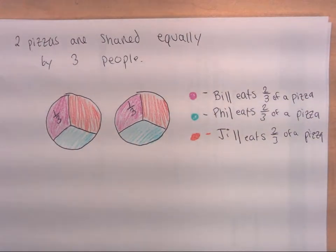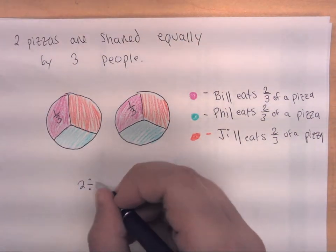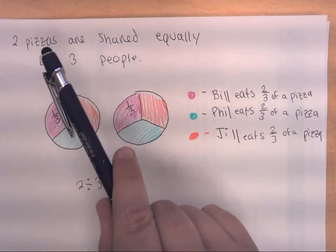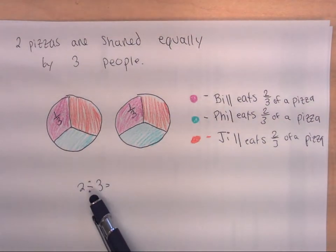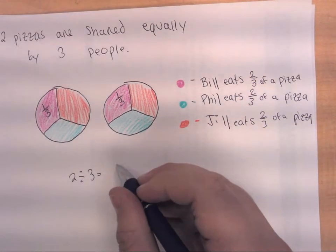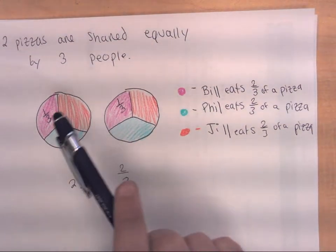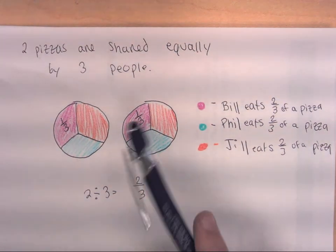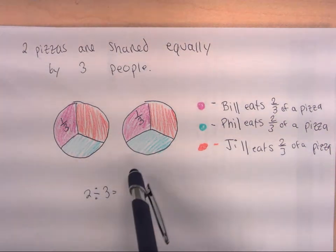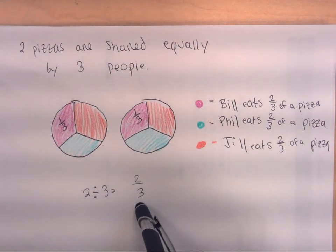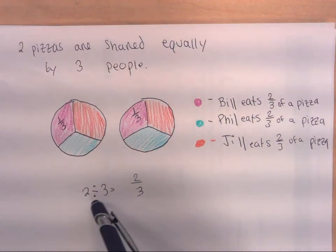When we use a situation — two pizzas being shared equally by three people — and especially combine that scenario with a diagram, it really helps us see that two divided by three is equal to two-thirds, and vice versa, two-thirds is equal to two divided by three.